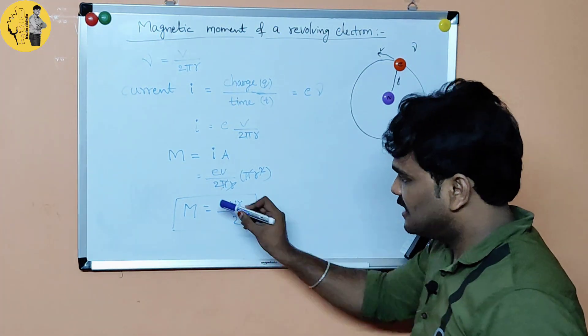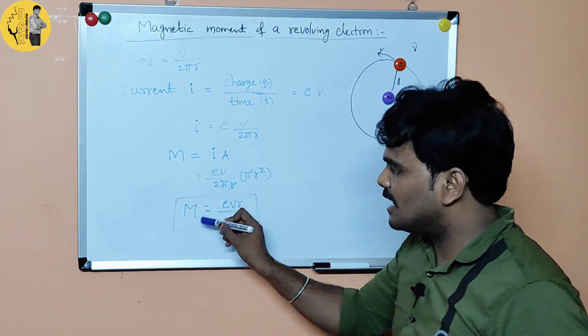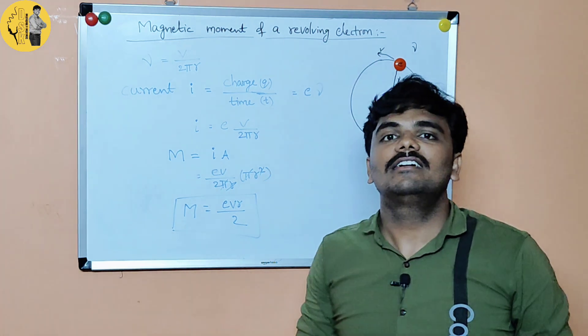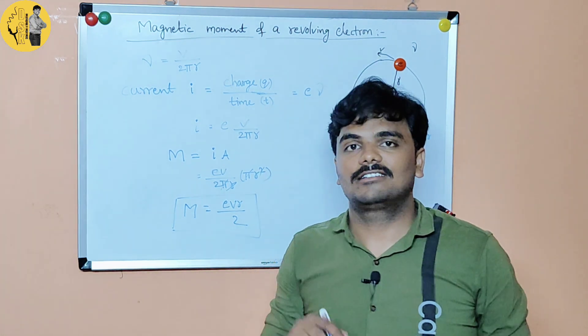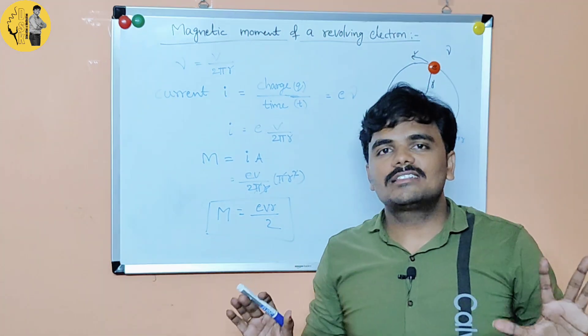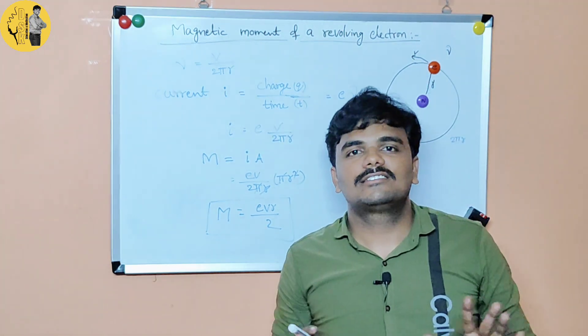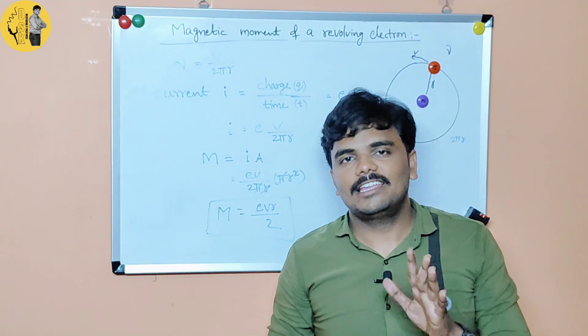So these are the two concepts covered in this class: the magnetic moment of a circular coil M equals NiA, and the magnetic dipole moment of a revolving electron M equals eVr by 2.